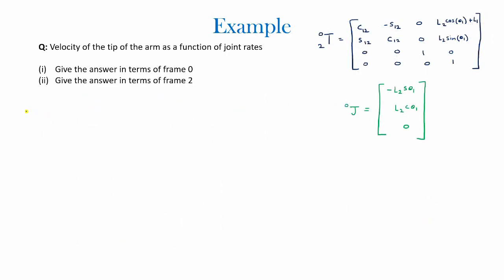Now we move on to the second part of the question. In the first part we found that the velocity in the 0th frame equals the Jacobian in the 0th frame times θ̇1. We can deduce that the velocity in the second frame equals the Jacobian in the second frame times θ̇1, so now we have to find the Jacobian in the second frame.